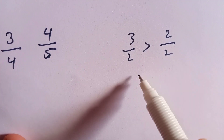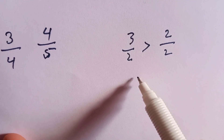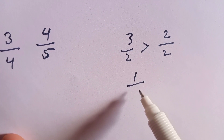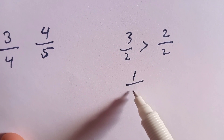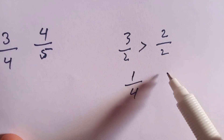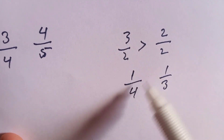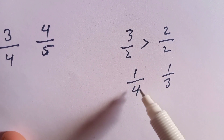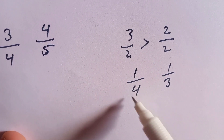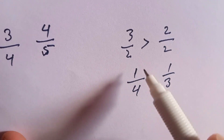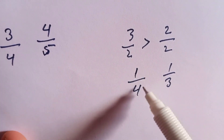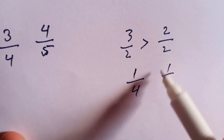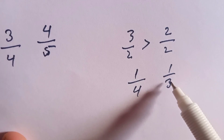Now there is another condition where the numerators are the same and the denominators are different, just like 1 over 4 and 1 over 3. Which one will be greater? The fraction with the greater denominator will be smaller, and the fraction with the smaller denominator will be greater.